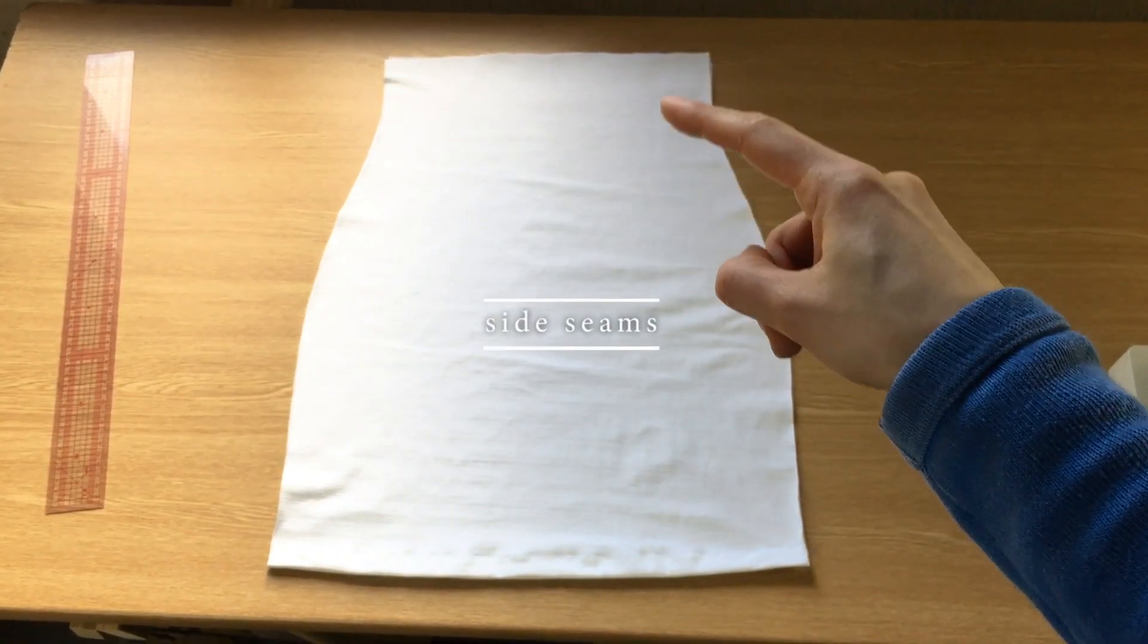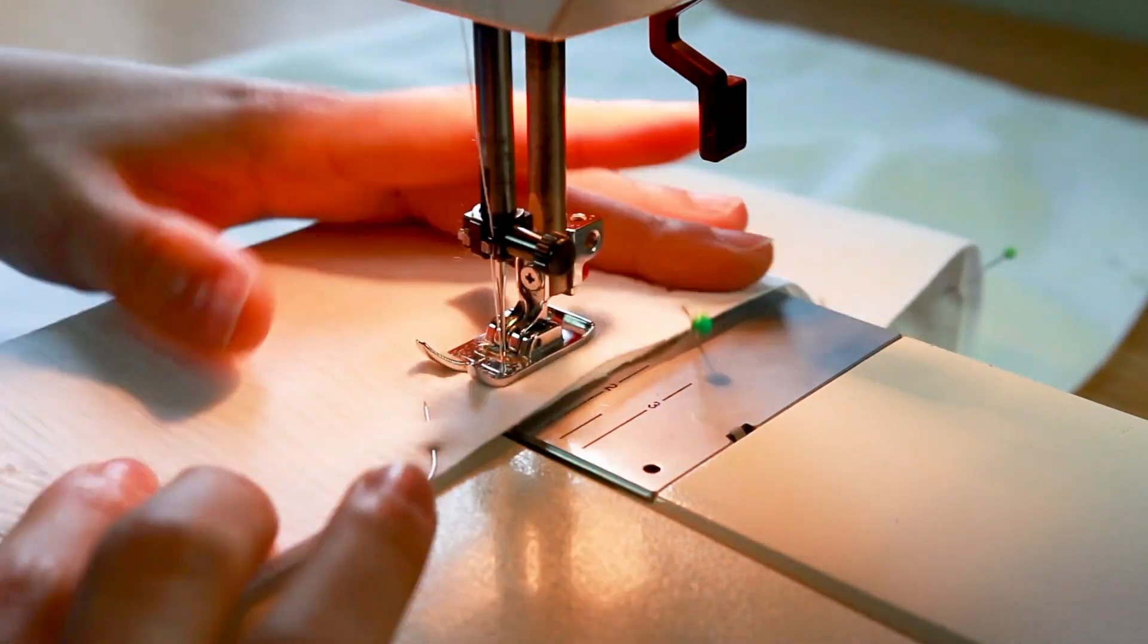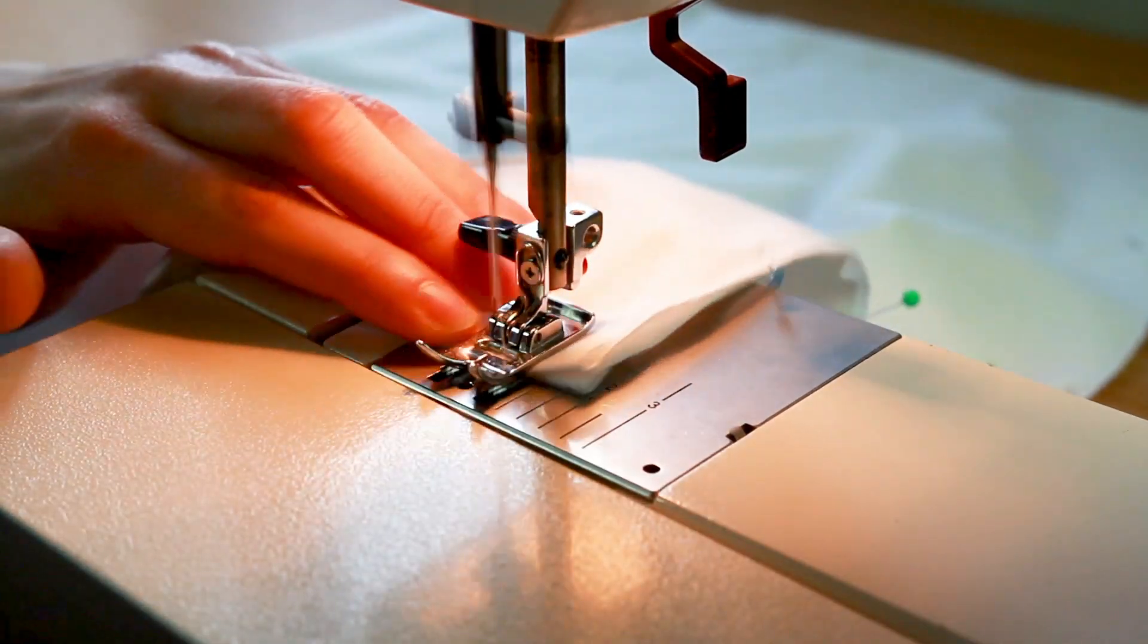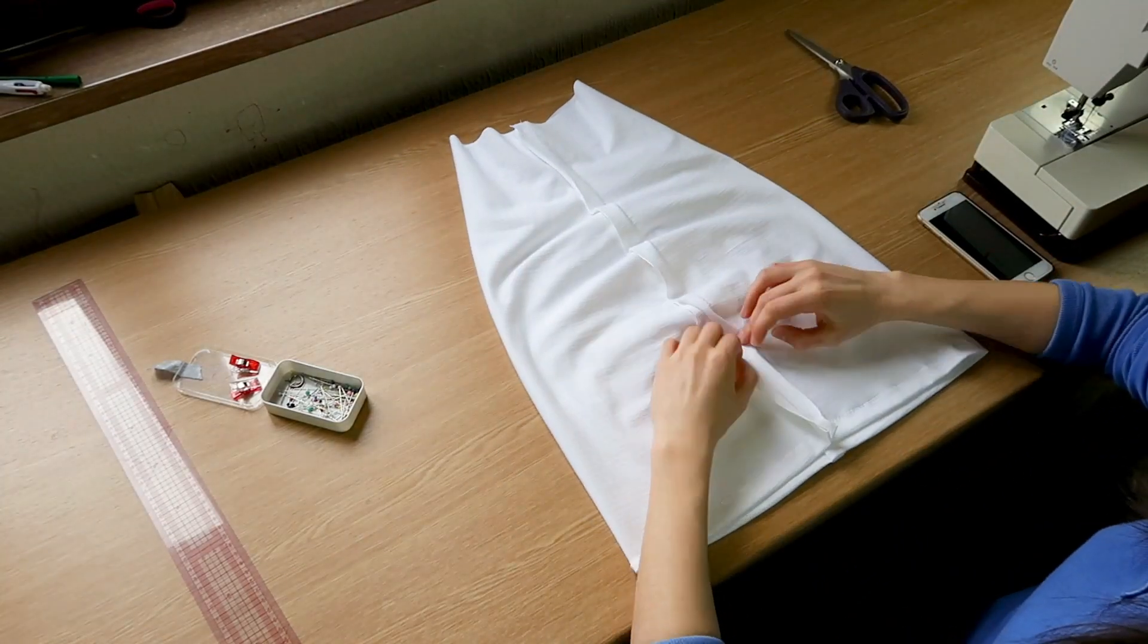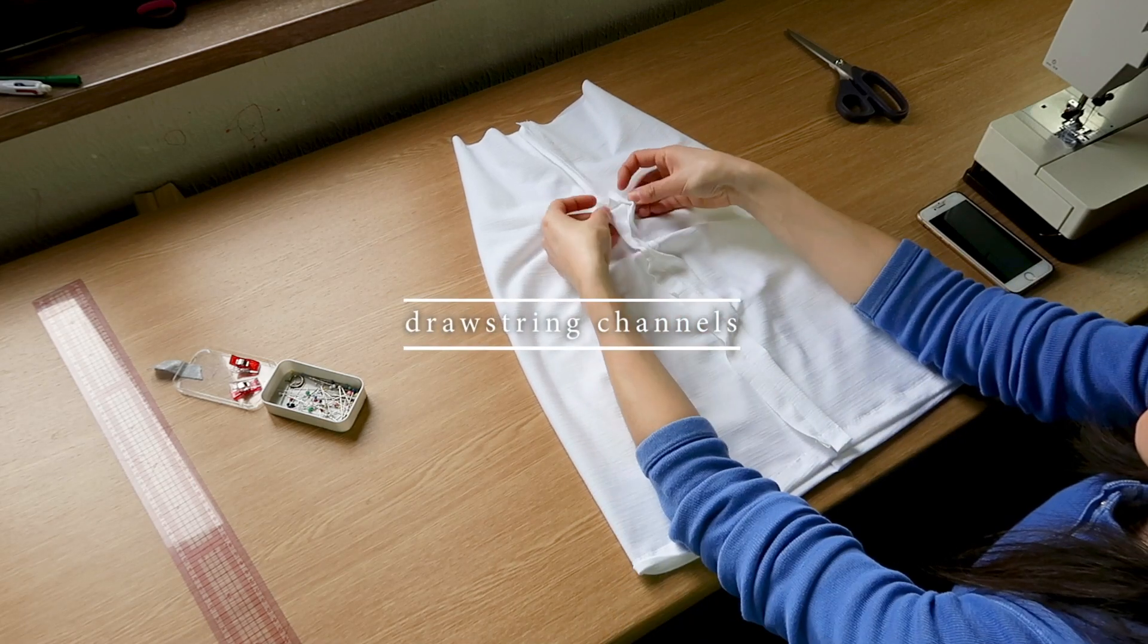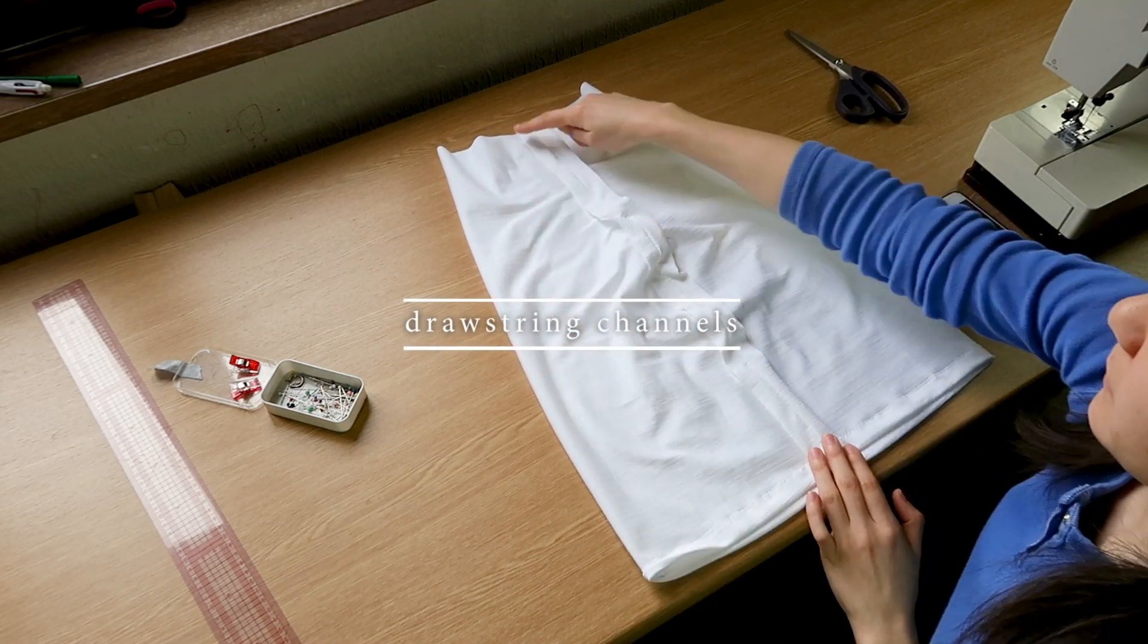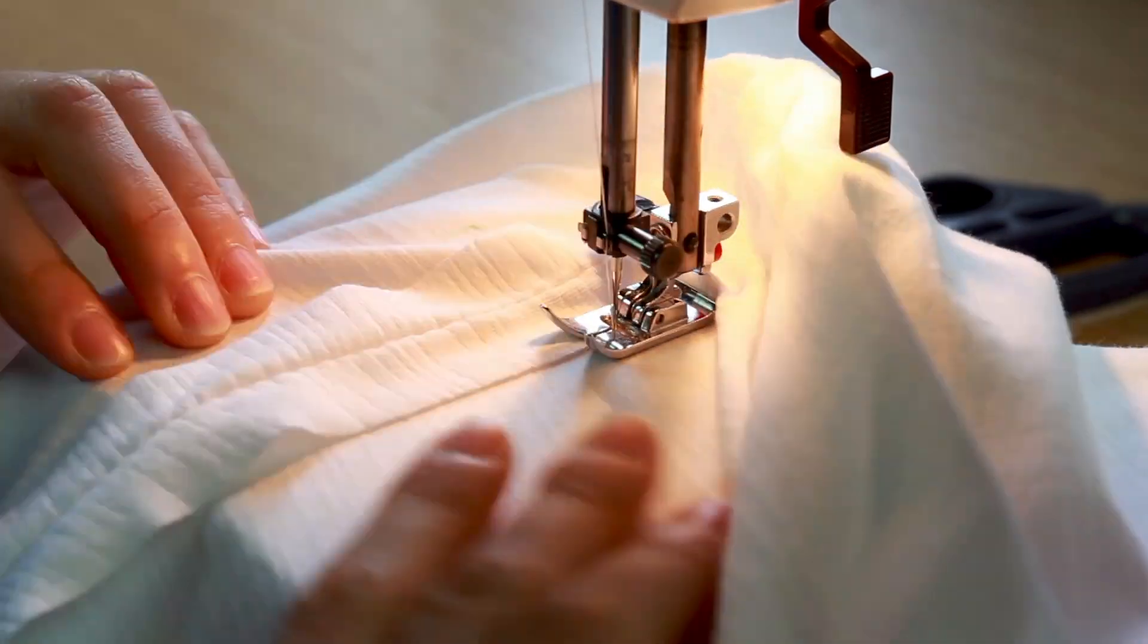Second, I lay the front and back parts on top of one another right sides together and I'll sew the two layers respecting two centimeters of seam allowance. I'm opening the seam allowances and I sew them flat to the dress, thus creating my drawstring channel.